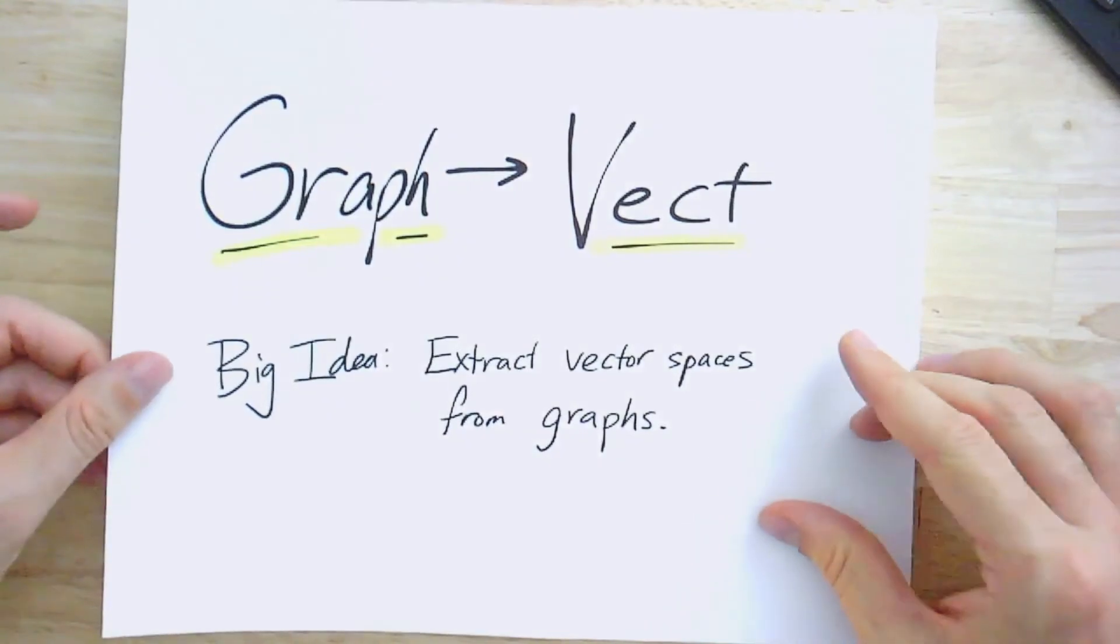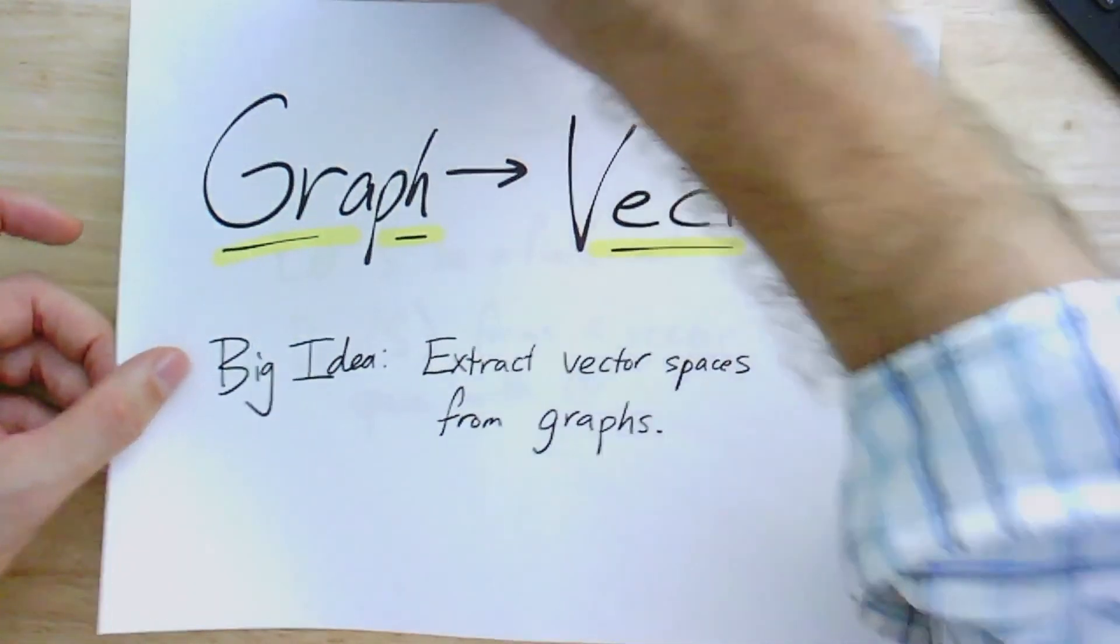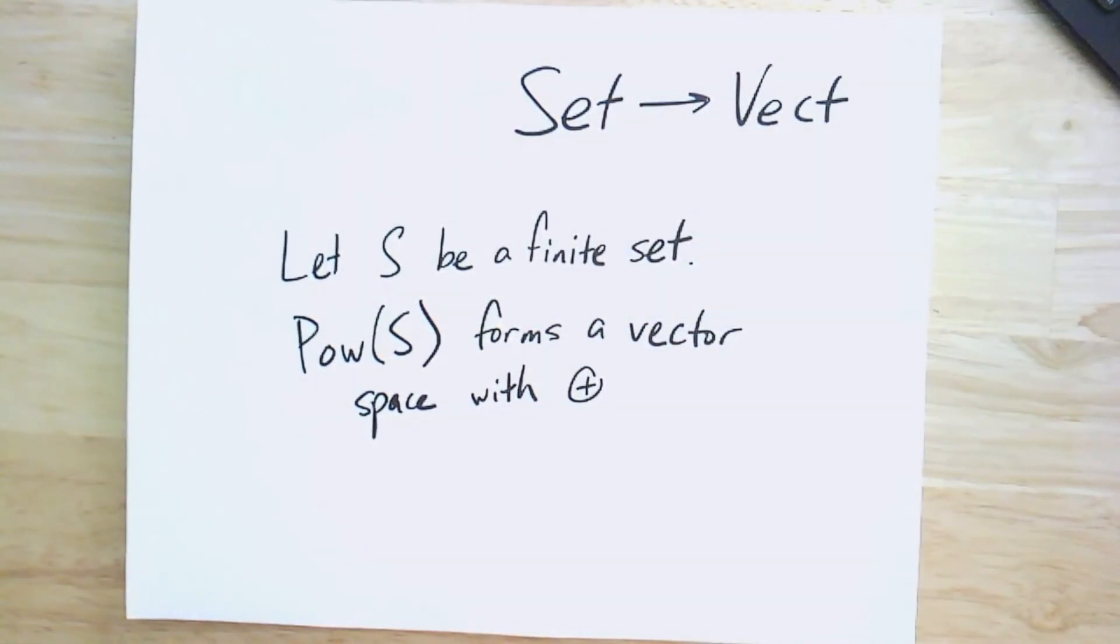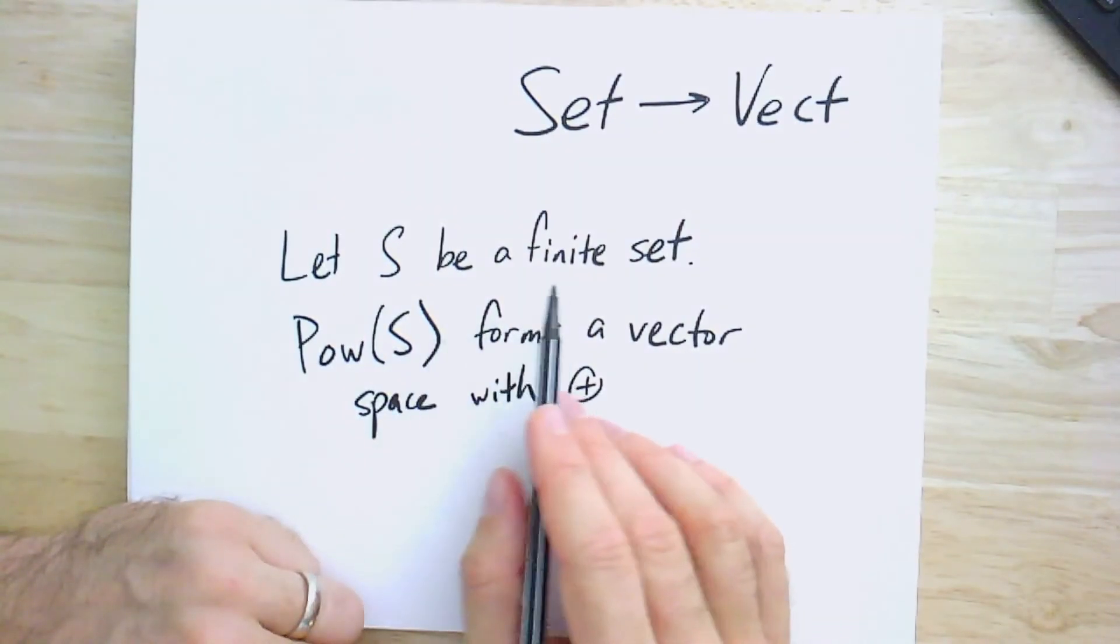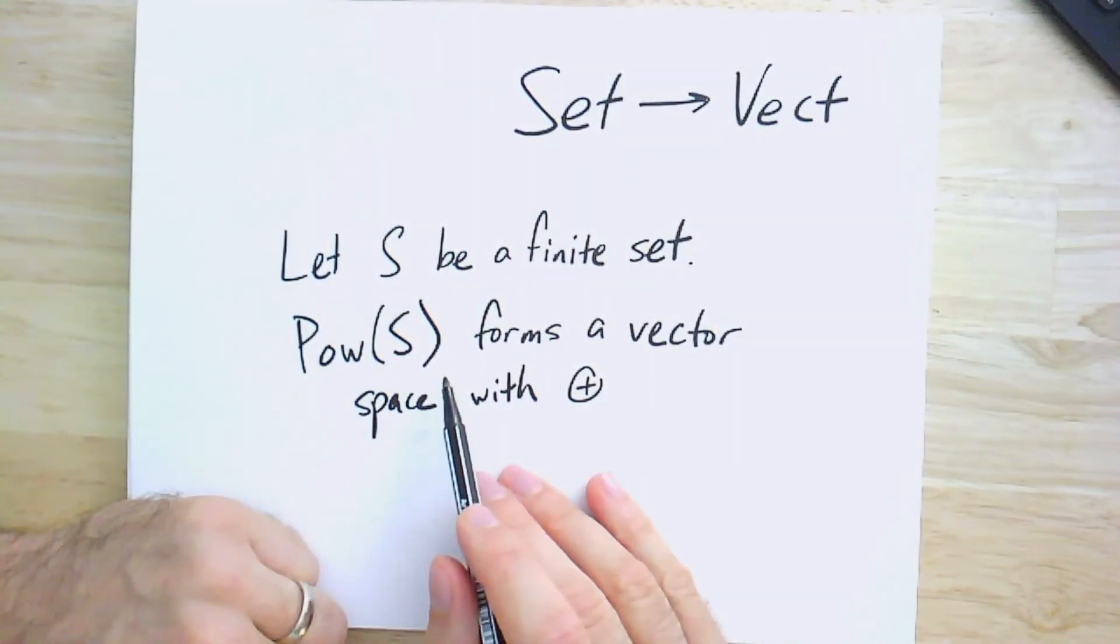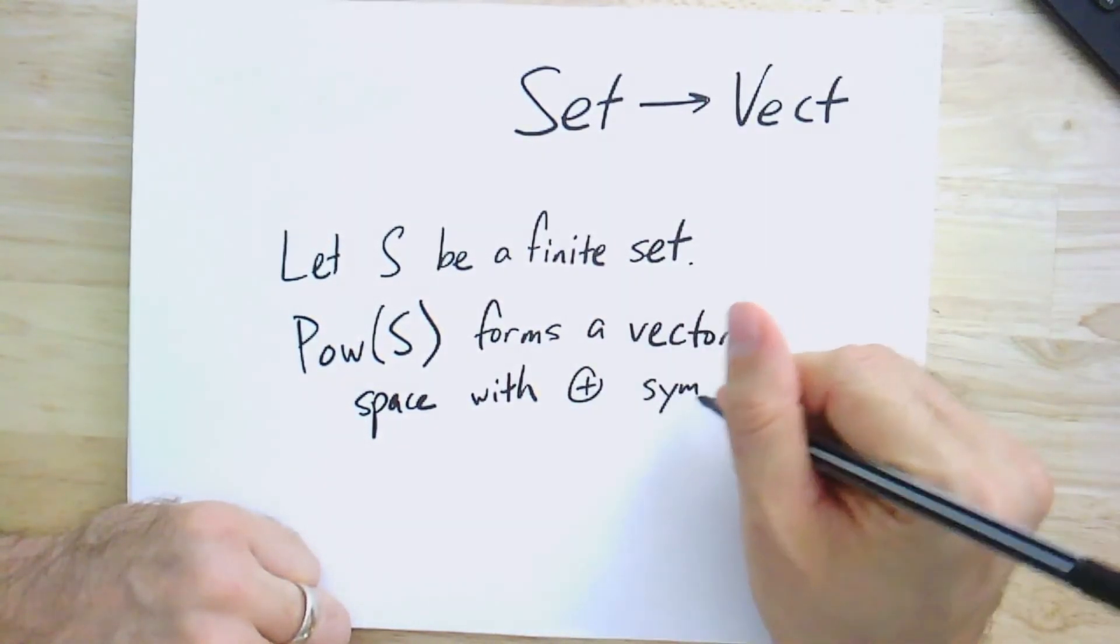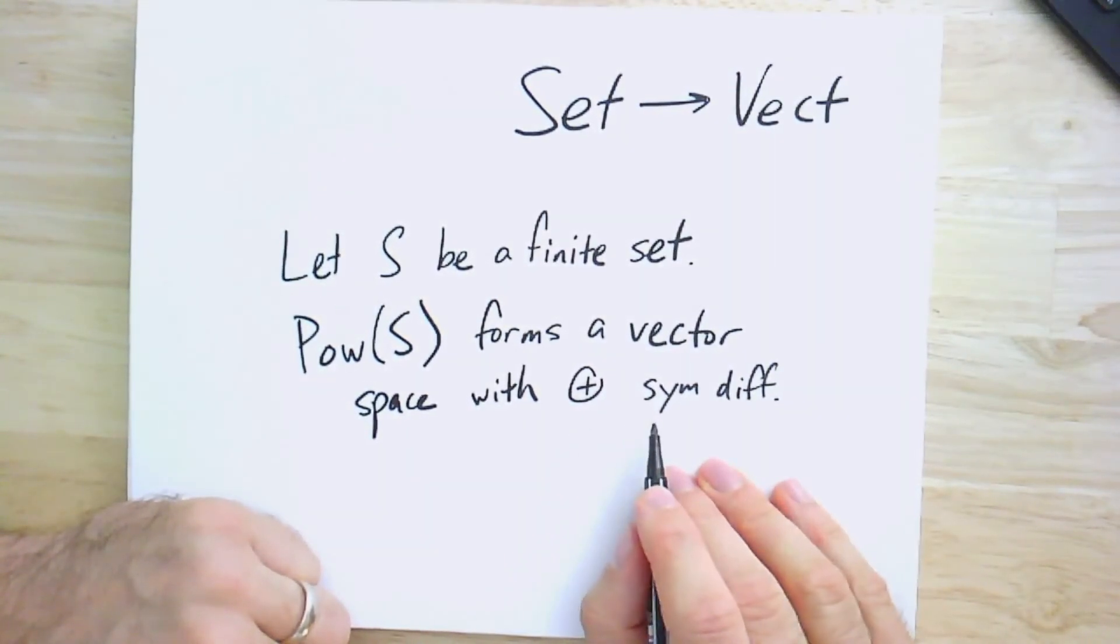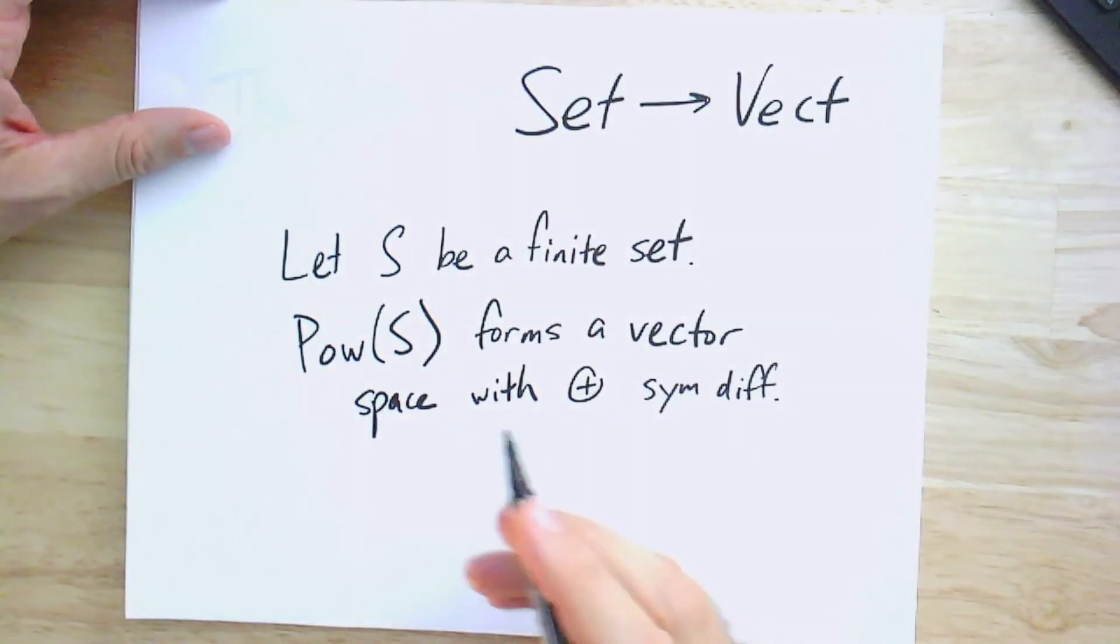So this is our big idea, from graph to vect. Vect is shorthand for all vector spaces and linear maps. We know how to take a set and turn it into a vector space. If you have a finite set, it doesn't actually have to be finite but it avoids some logical difficulties. We take the power set and allow the addition operation on sets to be the symmetric difference. I use this circle plus here. There's other symbols used for symmetric difference. I like this one because it's also used for XOR, and you should think about symmetric difference as a kind of XOR of sets.